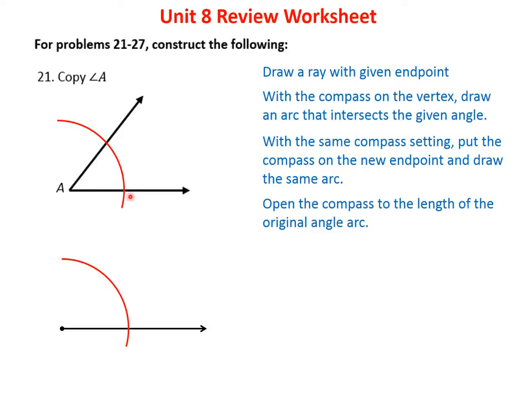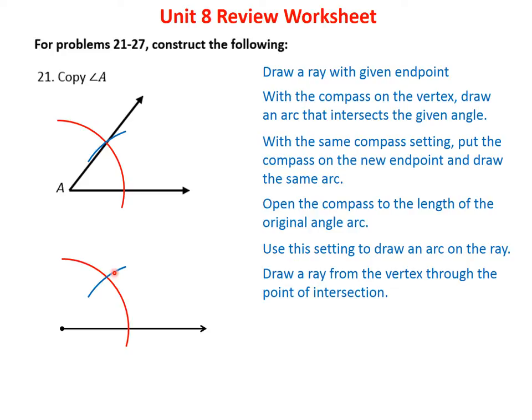Next, measure the arc width of the original angle by opening the compass from one intersection point to the other. Then, with that same setting, place the compass on the arc of your new ray and mark the intersection. Draw a line from the new vertex through that intersection point, and you've copied the angle.